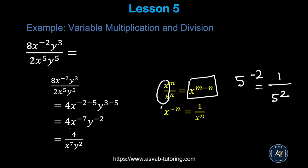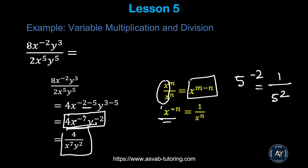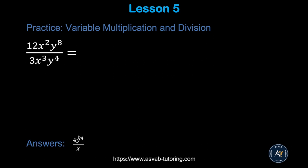So 8 divided by 2 gives you 4. Then x to the power negative 2 minus x to the power 5 gives you x to the negative 7, and y to the power 3 minus 5 gives y to the negative 2. Now x to the power negative 7 equals 1 over x to the 7th power, and y to the power negative 2 equals 1 over y squared. So the final answer is 4 over x⁷y². Pause the video and try the practice problem to make sure you get the same answer.